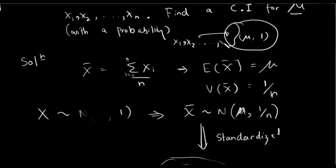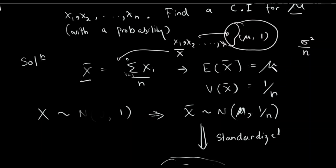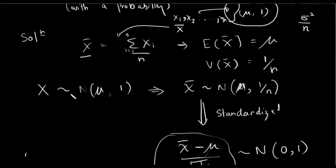From the sample x1, x2, ..., xn we define the sample mean x-bar as the summation of xi divided by n. Since x follows a normal population with parameter mu, x-bar follows a normal distribution with mean mu and variance sigma squared over n. If we take a different sample, we can calculate the same sample mean, and the distribution of x-bar depends on sigma and mu.